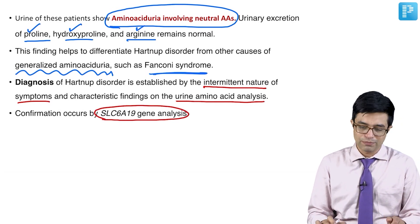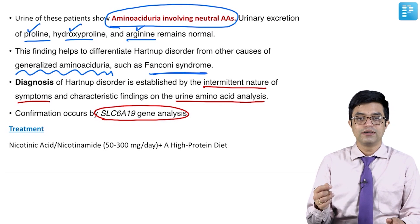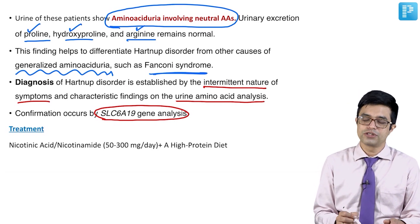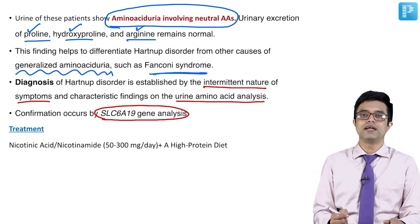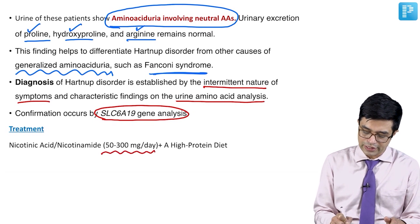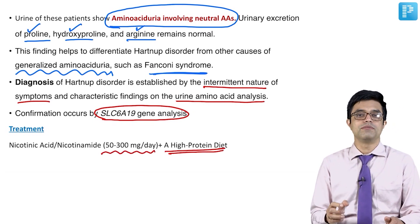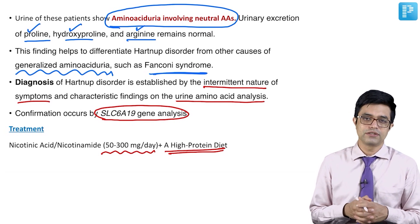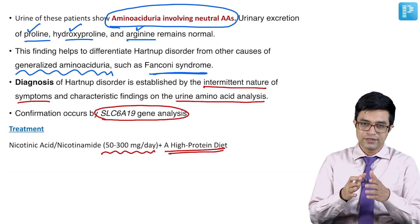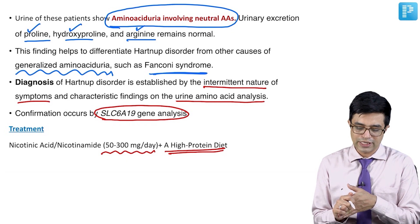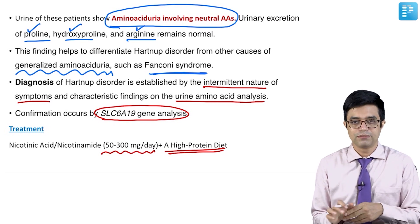Treatment comprises administration of large doses of nicotinamide or nicotinic acid. The dose is 50 to 300 milligrams per day along with a high protein diet. This is the first disorder in this group of other amino acids — Hartnup disease.